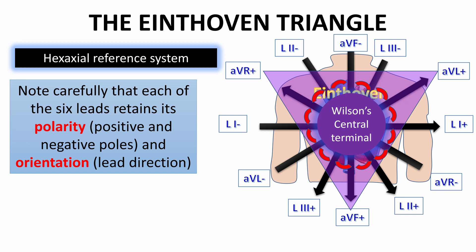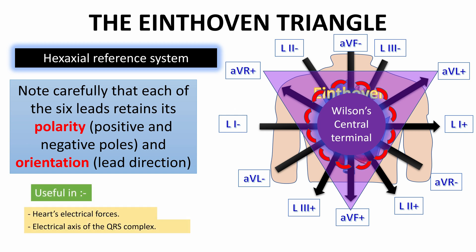But after all of that, what is the benefit from all this — the Eindhoven Triangle and the triaxial and hexaxial reference systems? This is important in determining the major direction of the heart's electrical forces. As we shall see later, this is what we call the electrical axis of the QRS complex, and this will determine some of the electrical axis abnormalities.